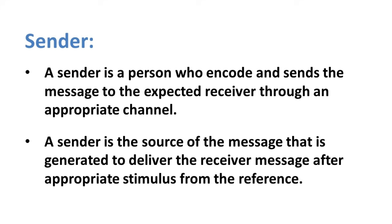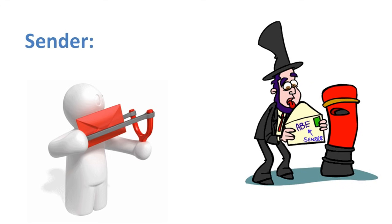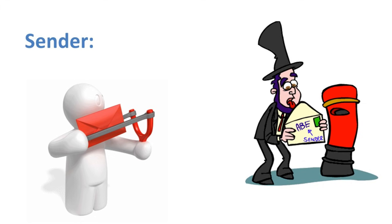After referent we have sender. A sender is a person who encodes and sends the message to the expected receiver through an appropriate channel. A sender is the source of the message generated to deliver to the receiver after appropriate stimulus from the referent. In simple words, the sender is the first source responsible for sending the message — the person who wants to ask or share something with someone. For example, a person posting a letter in a letterbox is a sender who wants the recipient to read it.